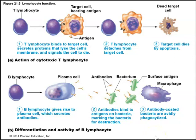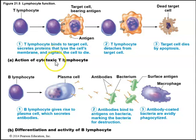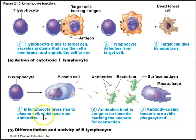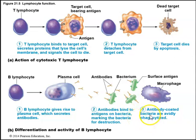Here we see different actions of lymphocytes. The cytotoxic T-lymphocyte, once it recognizes a target cell, secretes proteins that lyse or perforate the cell membrane and signal that cell to die by apoptosis. The T-lymphocyte then detaches from the target cell. For B-lymphocytes, they give rise to plasma cells that secrete antibodies. These antibodies bind to antigens on bacteria, marking them for destruction. Macrophages then phagocytize the antibody-coated bacteria.